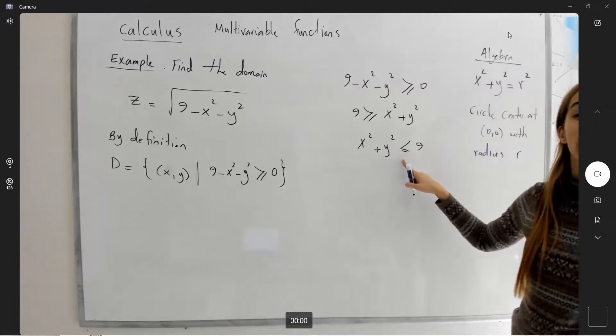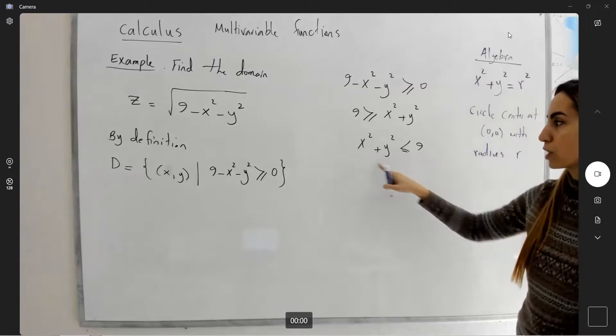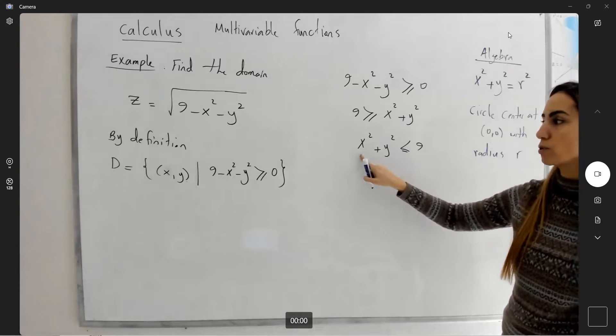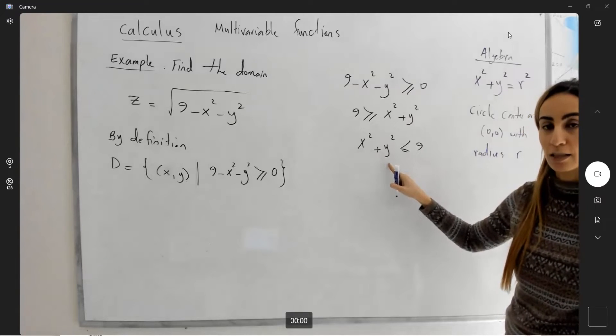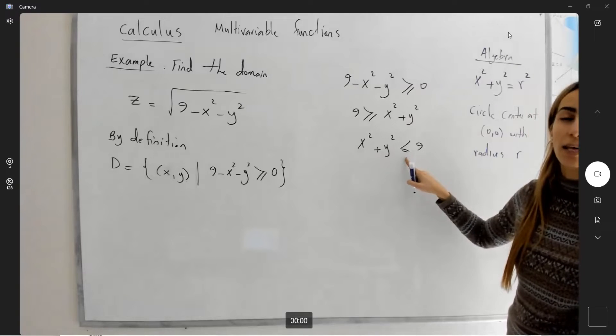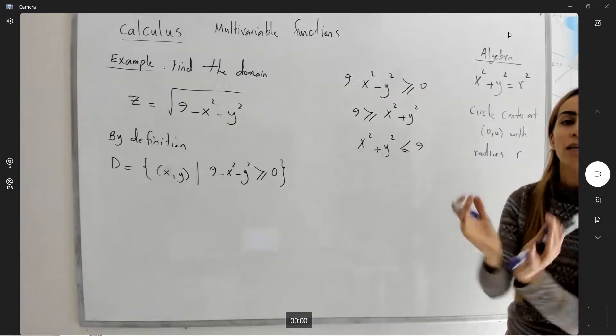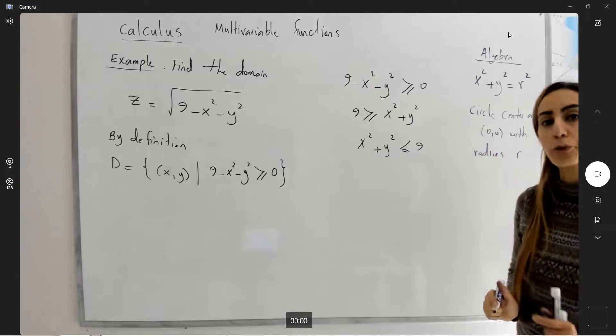But here I have inequality. Well, the meaning of that is you have all points x and y. If you square x, square y, add them together, it's less than or equal to 9. All of the points inside a circle of radius 3.